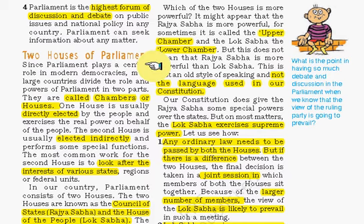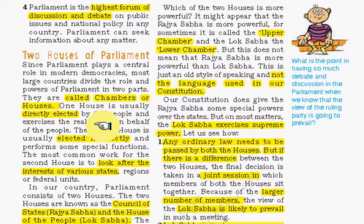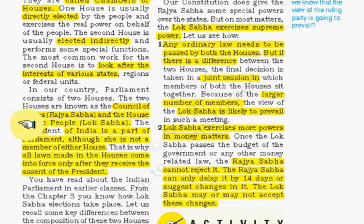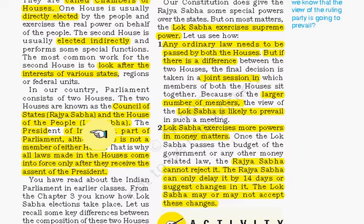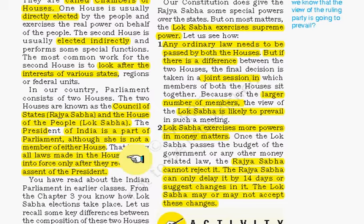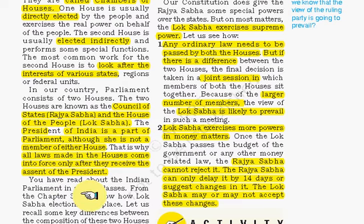There are two houses in Parliament. The first house is the chamber of directly elected people, known as Lok Sabha. The others are indirectly elected, known as Rajya Sabha — also called the Council of States as it represents representatives from states. Lok Sabha is known as the House of the People as it consists of directly elected members. The president is part of Parliament, although not a member of either house, because all laws made in these houses come into force only when they receive the assent of the president.